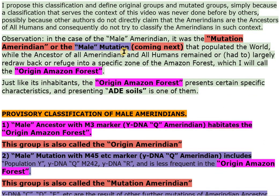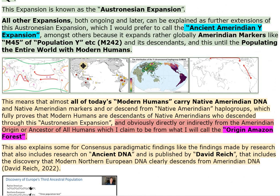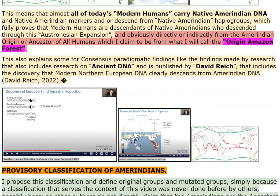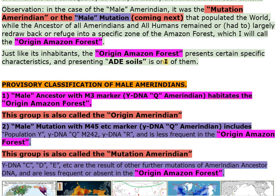Observation: In the case of the male Amerindian, it was the mutation Amerindian — the male mutation — that populated the world, while the ancestor of all Amerindians and all humans had to largely retreat or refuge into a specific zone of the Amazon forest, which I will call the origin Amazon forest. Just like its inhabitants, the origin Amazon forest presents certain specific characteristics, and presenting ADE soils is one of them.